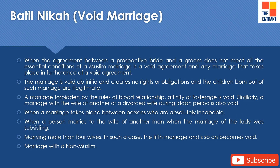Batil nikah or void marriage. When the agreement between a prospective bride and groom does not meet all the essential conditions of a Muslim marriage, it is considered to be a void agreement, and any marriage that takes place in furtherance of such an agreement is void ab initio — it creates no rights or obligations, and the children born out of such a marriage are considered to be illegitimate. A marriage forbidden by the rules of blood relationship, affinity, or fosterage is void. Similarly, a marriage with the wife of another, or a divorced wife during the iddah period, is also void.